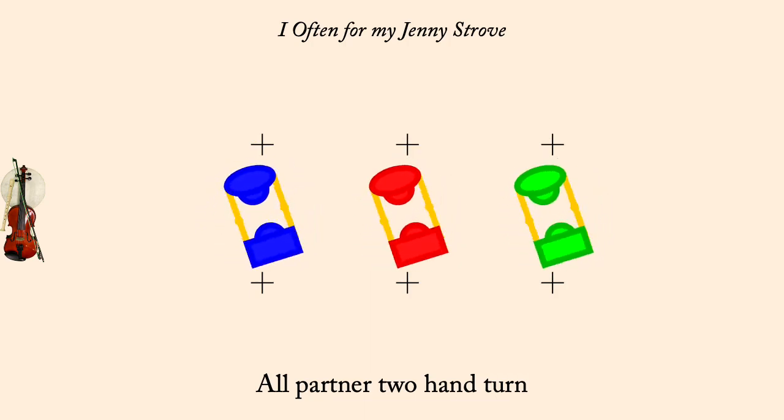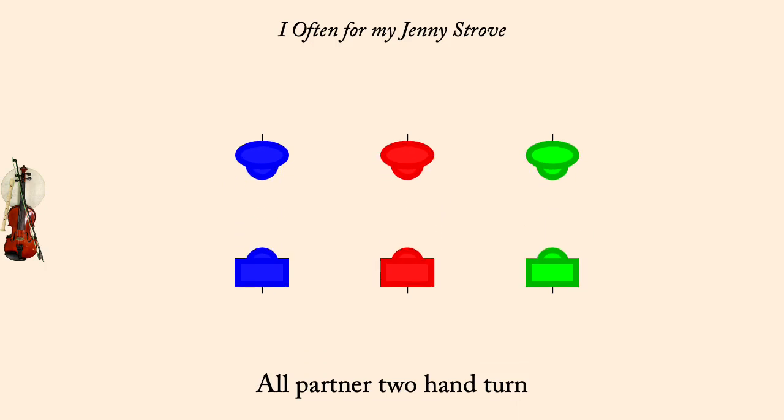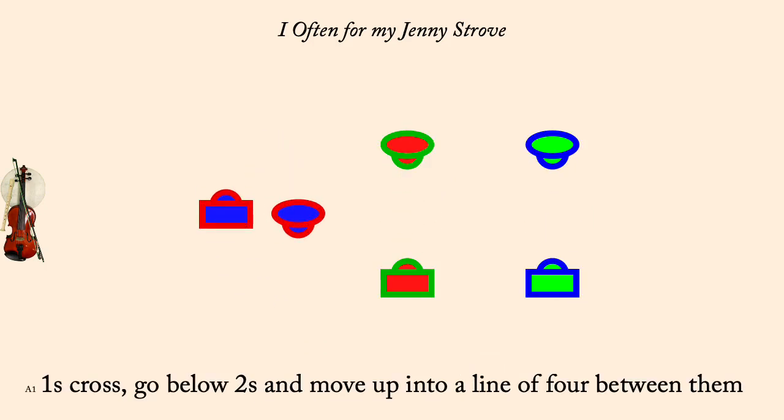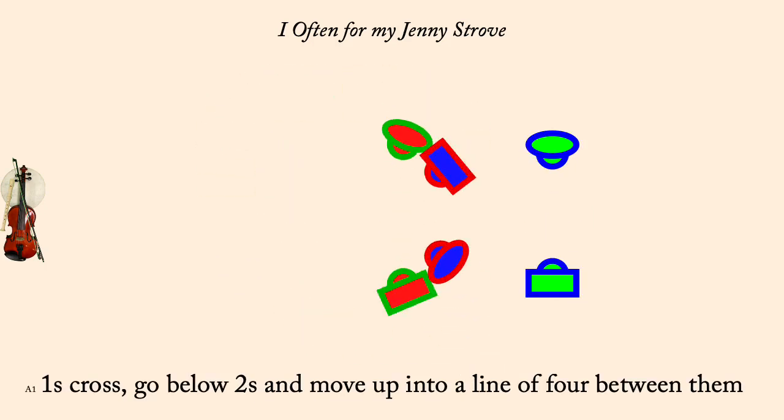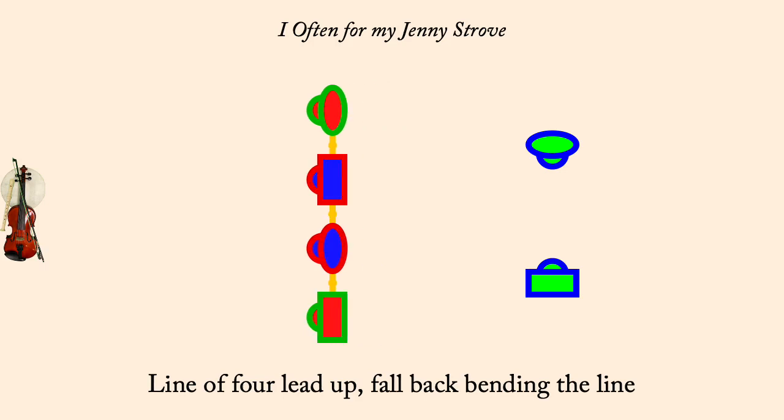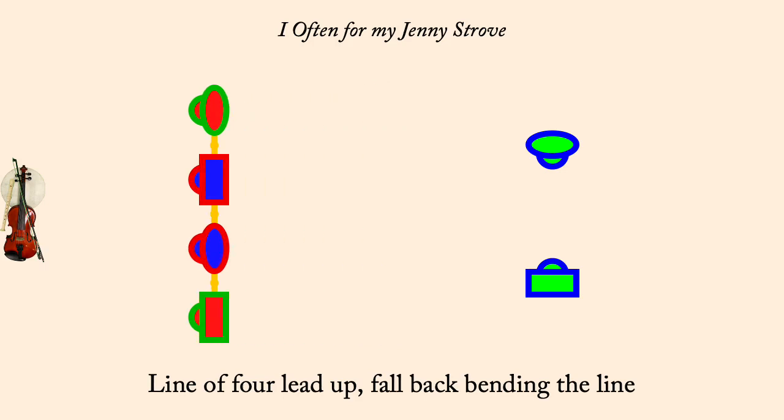Ones cross, go below twos, come up and form a line of four between them. Line of four, up a double, fall back, bending the line.